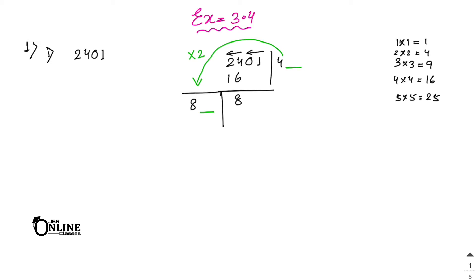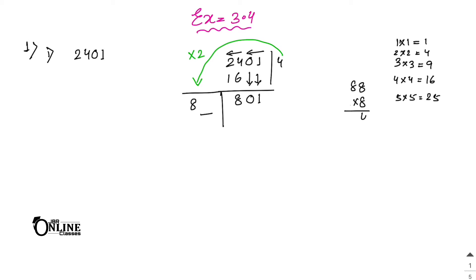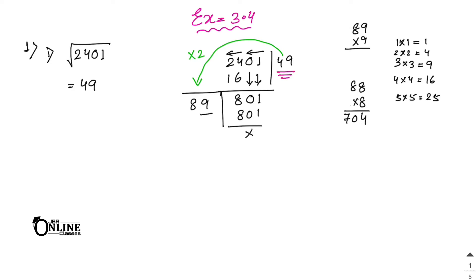Bring down the next pair 01, making it 801. If you try 8 in the ones place: 88×8=704, which is less. Try 89×9=801 — that works perfectly. So the square root of 2401 equals 49. That is your answer.